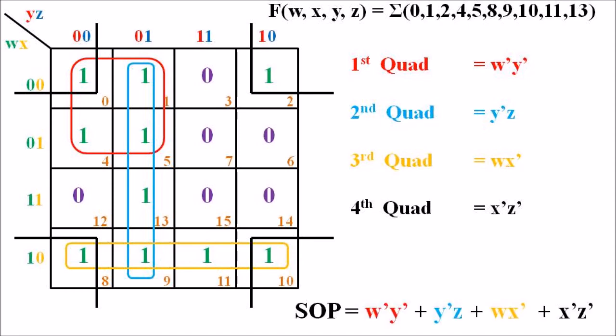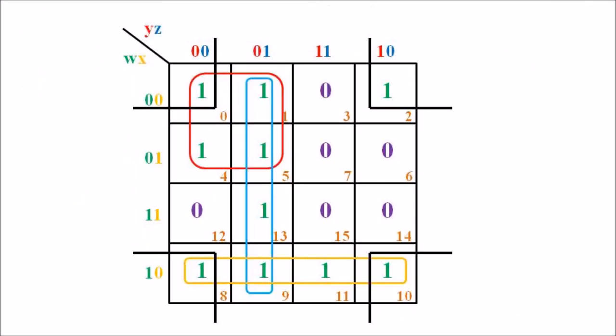We can now conclude that the SOP for the given function is: f = w'y' + y'z + wx' + x'z'. Thus f(w, x, y, z) = Σ(0, 1, 2, 4, 5, 8, 9, 10, 11, 13) simplifies to w'y' + y'z + wx' + x'z'.